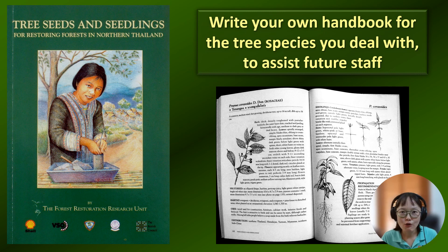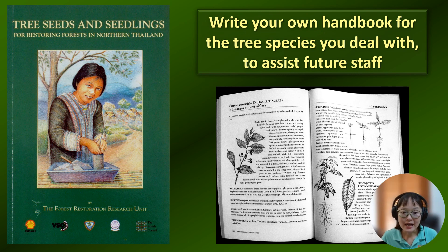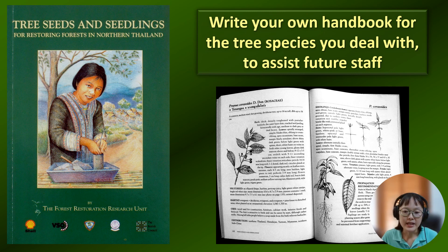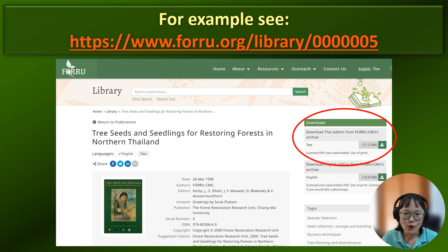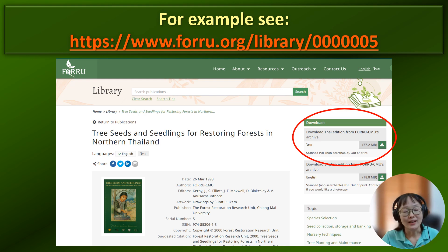If possible, write your own seedling books. Here is an example of FORRU's tree seeds and seedlings book — inside, for each species, we have pictures, scientific drawings, descriptions of how barks look, the leaves, the fruits, and the seedlings. This will be very helpful for future staff to study and know more about the species. FORRU makes the seeds and seedlings book available online for free at forru.org in the library section. Right now we have Thai and English versions, and we are due to update the book in the next few weeks.